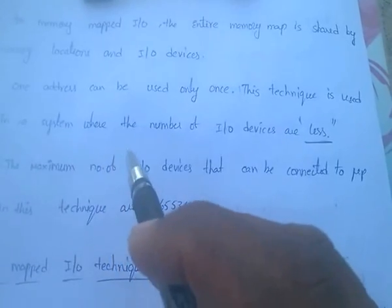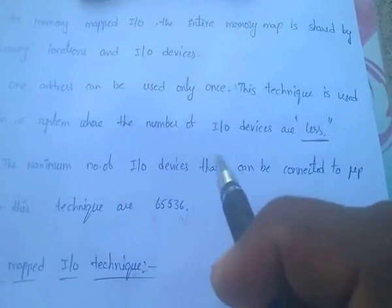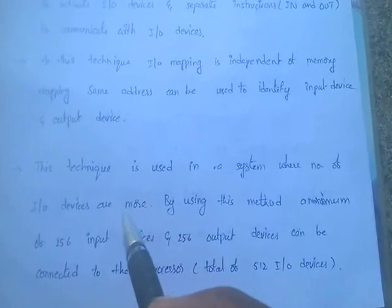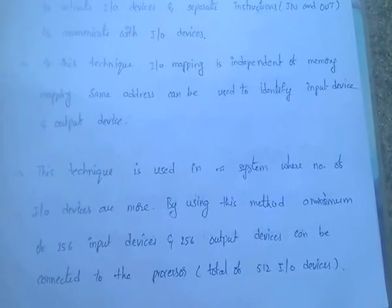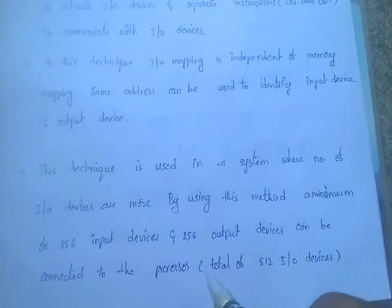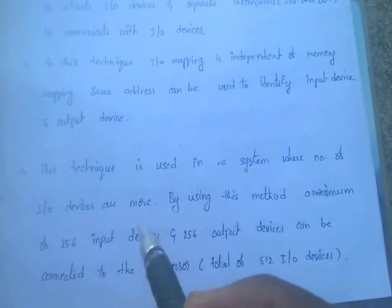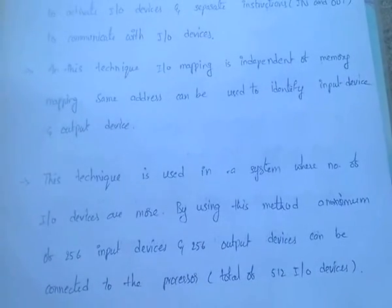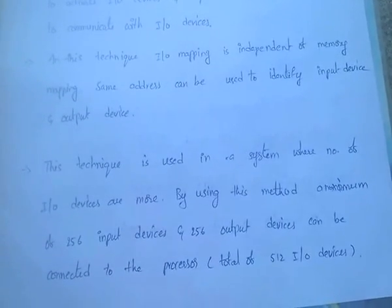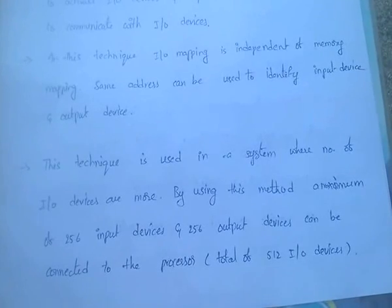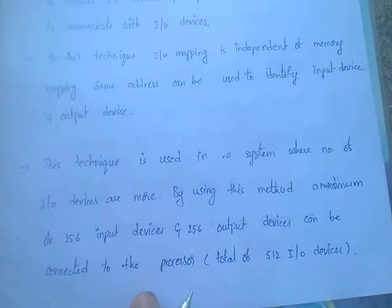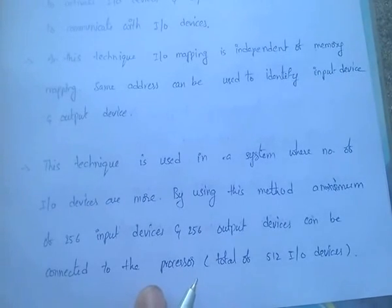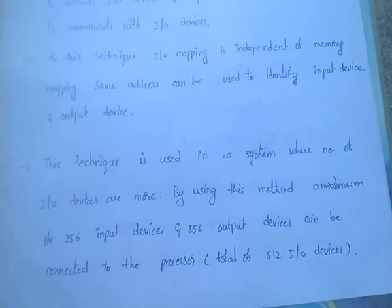In memory mapped I/O, it is the technique used for a system where the number of I/O devices are very less. By using I/O mapped I/O, a maximum of 256 input devices and 256 output devices can be connected to the processor — that means a total of 512 I/O devices.